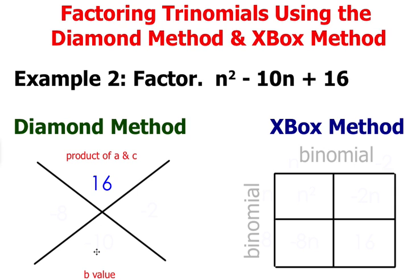At the bottom of the X, you're going to write the value of b, which is negative 10. So now you have to think of two factors that have a product of 16 but have a sum of negative 10.